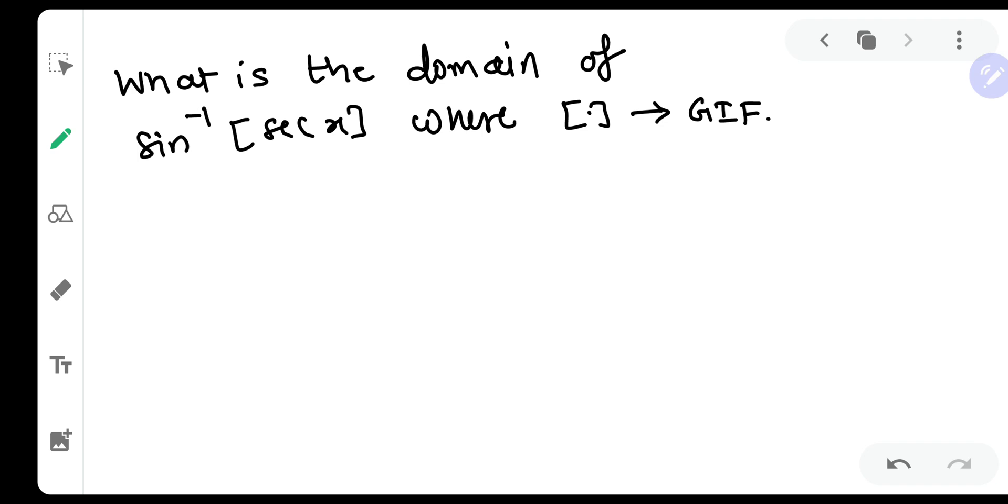Now domain means we need to calculate the permissible values of x. We all know that whenever we have sine inverse of x, then x can be between minus one to one, inclusive of both. But instead of x they have given us GIF of sec x, therefore GIF of sec x should lie between minus one to one.